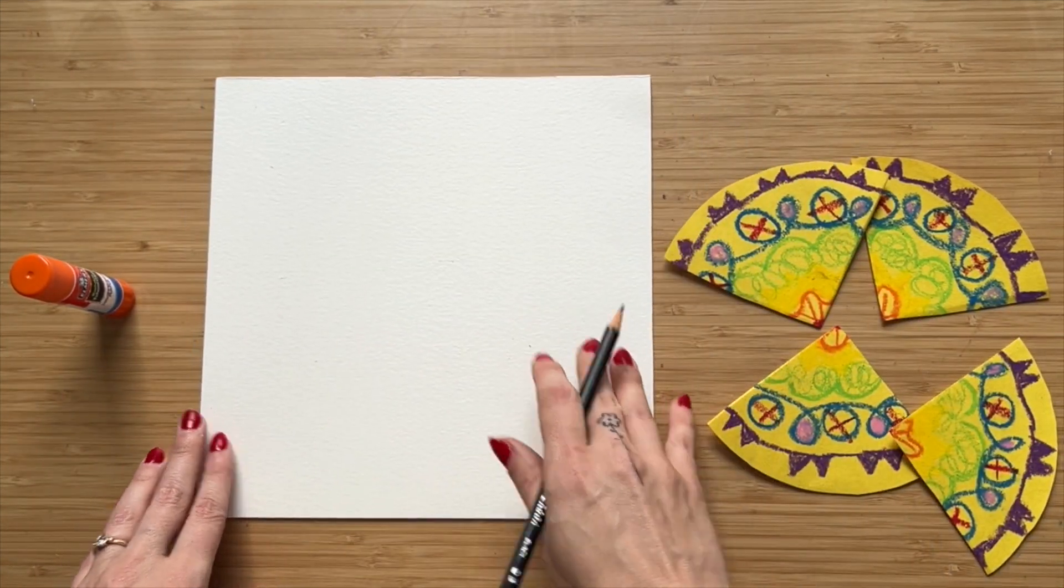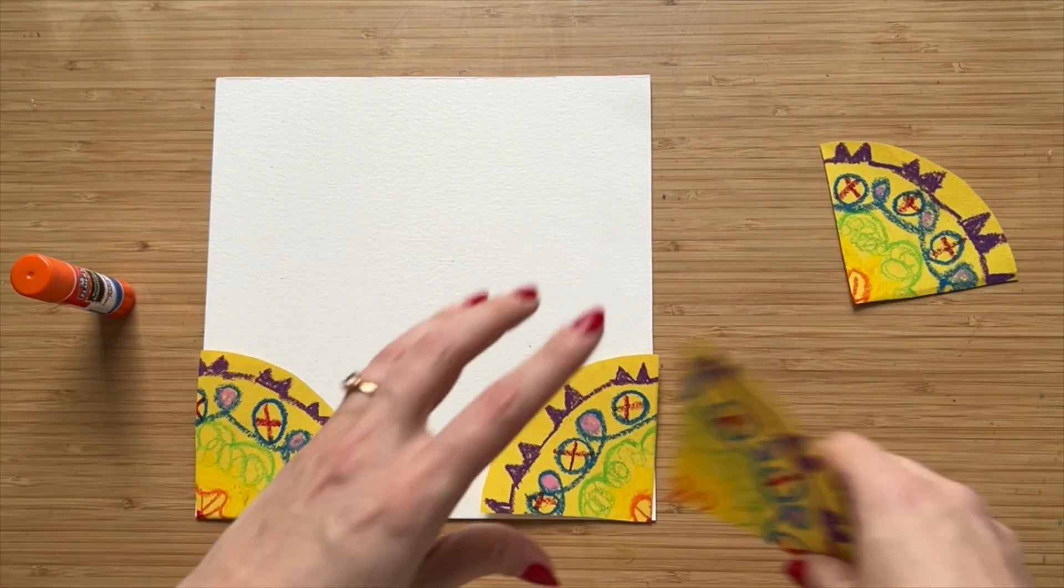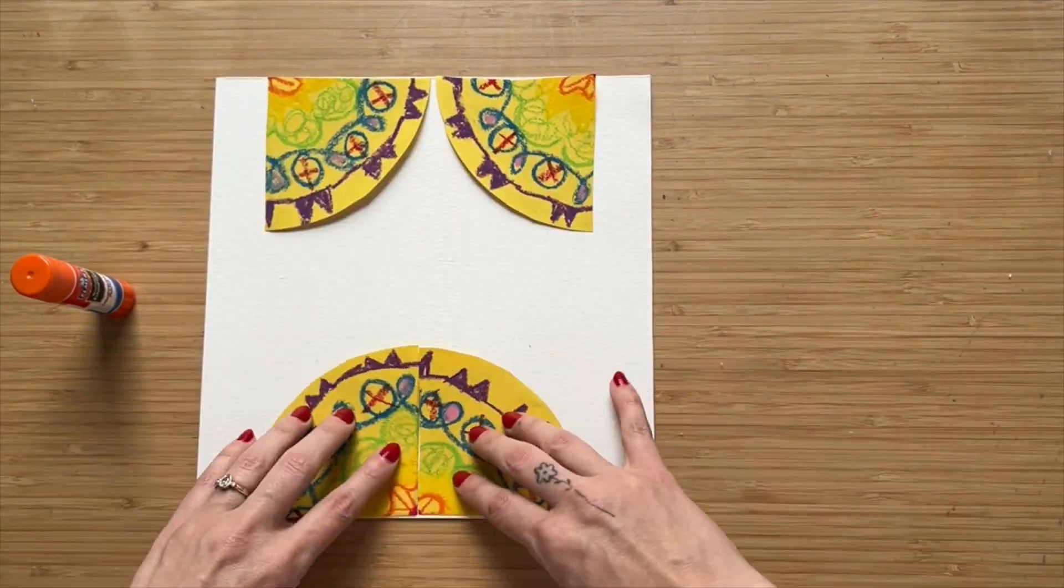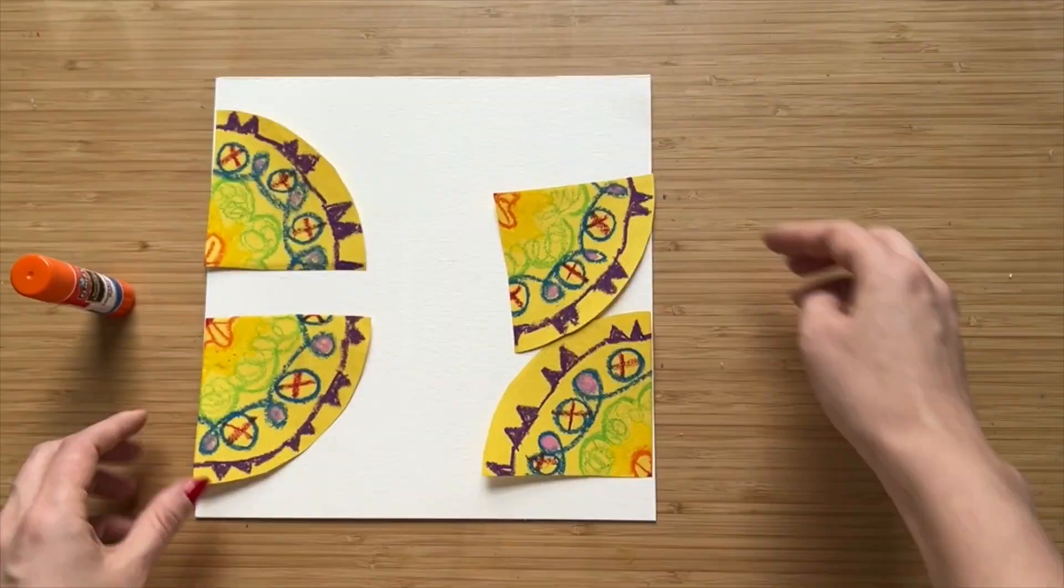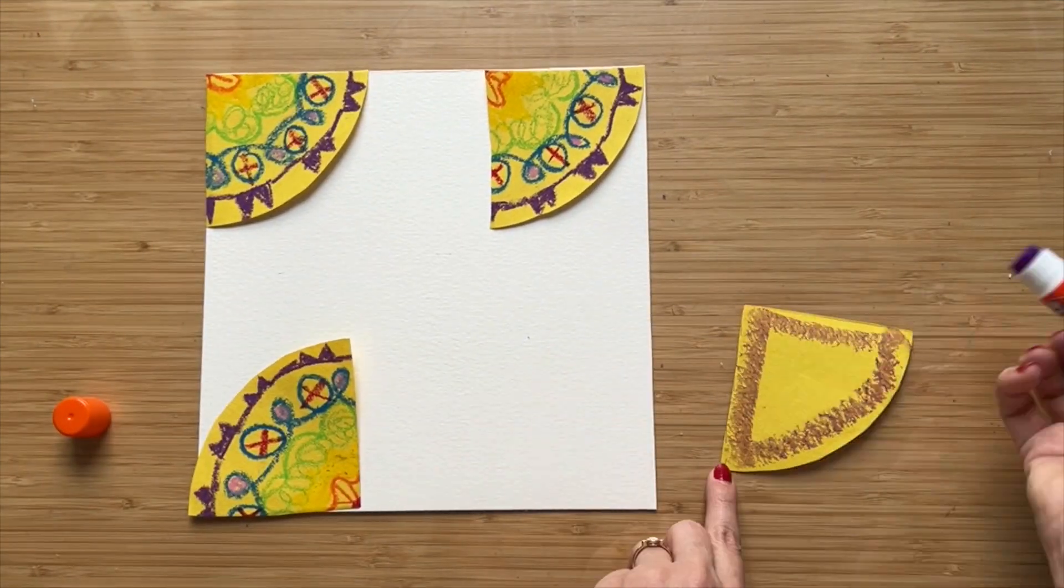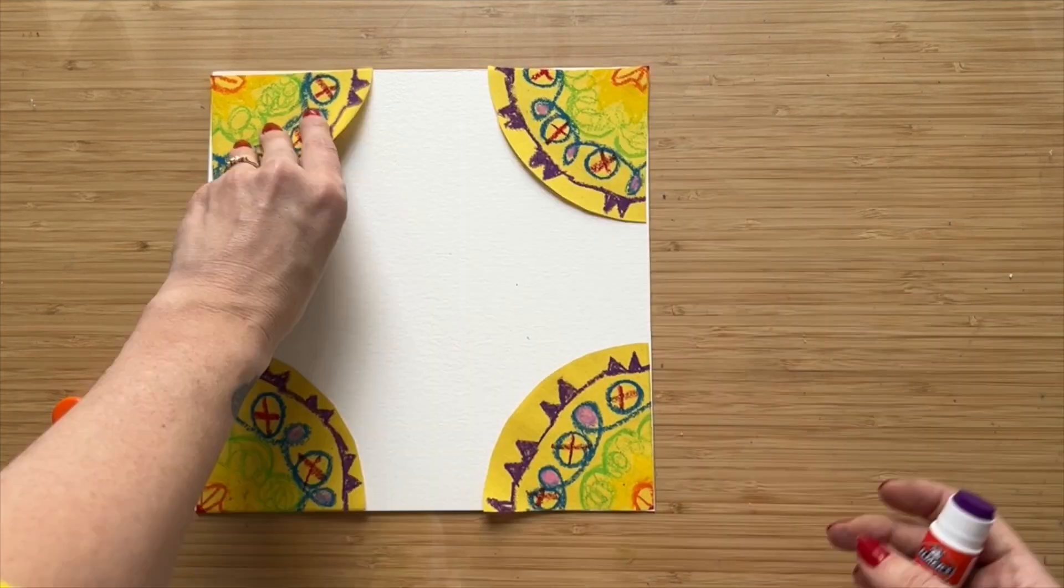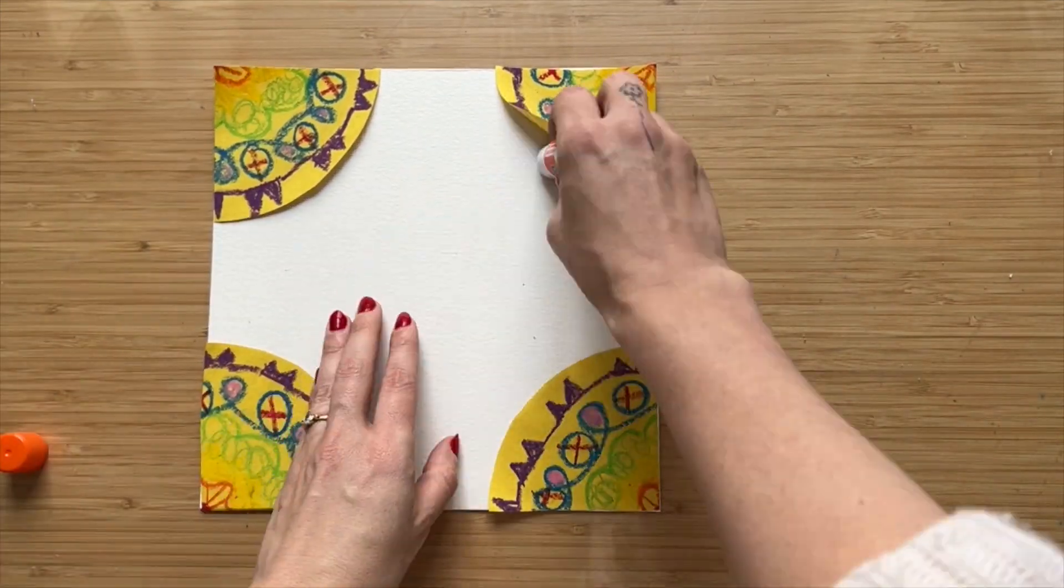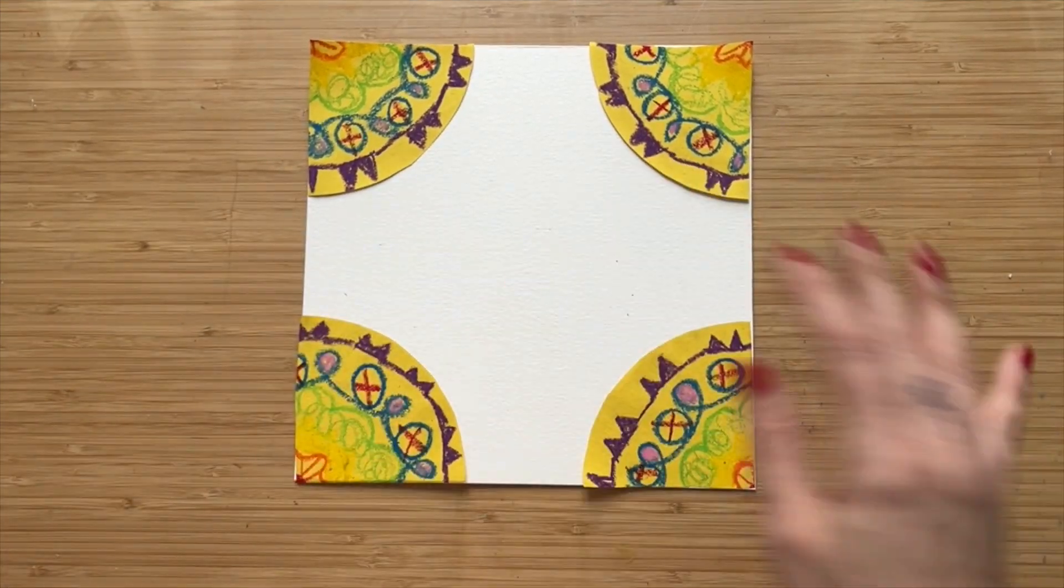And you can put the pencil to the side and decide how you want to arrange your circles. You can have them in so many different ways. It's totally up to you. The only requirement is that the straight side needs to be touching one of the edges, so not the round curved side. And if yours is sticking up a little bit like mine was, you can just push it down.